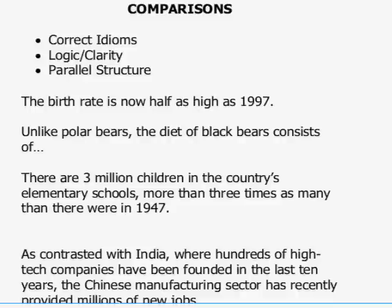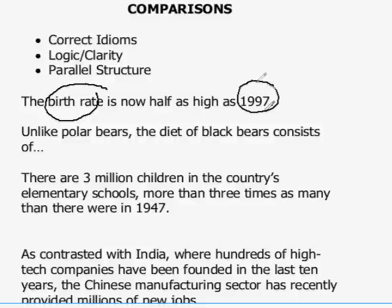For example: 'The birth rate is now half as high as 1997.' What are we comparing here? The current birth rate with a year? That doesn't make sense. We should compare birth rate with birth rate. So the best thing to say is: 'The birth rate is now half as high as it was in 1997.'